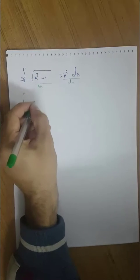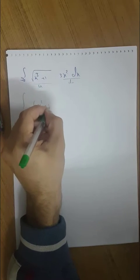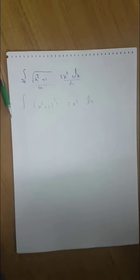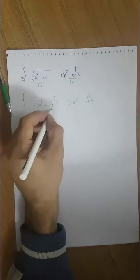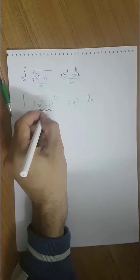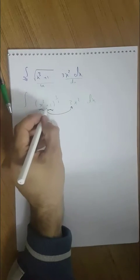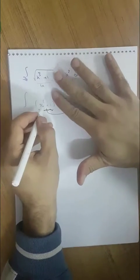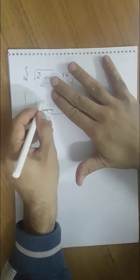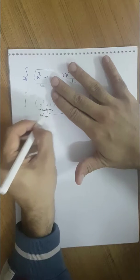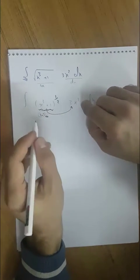Just imagine that you have a u. Why do I see u? Because you can say x cubed plus 1, to the power one-half, times 3x squared dx. The derivative of the inside — forget about the one-half and the square root — we say this is like a u. So the derivative of the inside is equal to 3x squared. Because the derivative is already here, we can apply substitution.